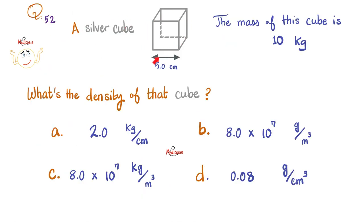Next, here is a silver cube, and this is the length of the side, 5 centimeters. The mass of this cube is 10 kilograms. What's the density of that cube? The first thing is to look at the choices and look at the measuring unit. You know already that density equals mass over volume. And the volume is never measured in centimeters, so A is out. After this, unfortunately I have to do the math many times to get these different measuring units.